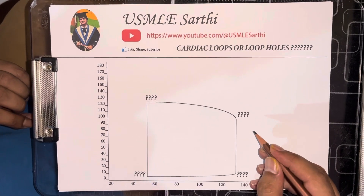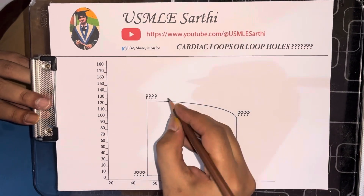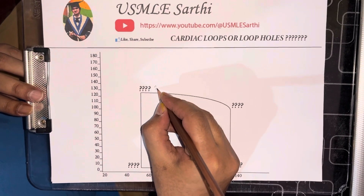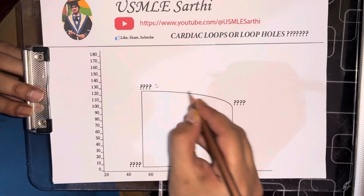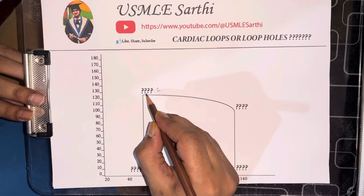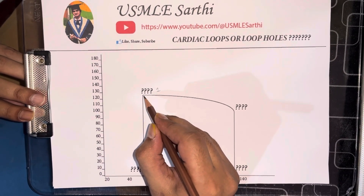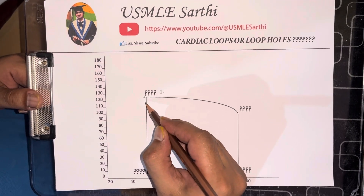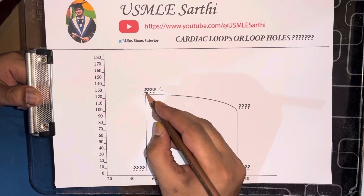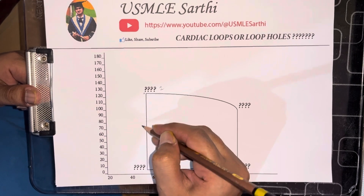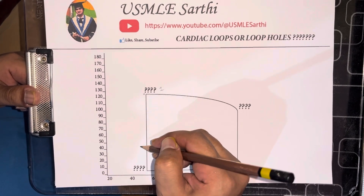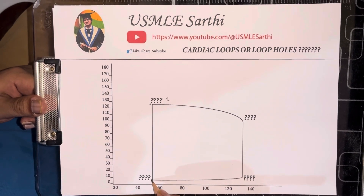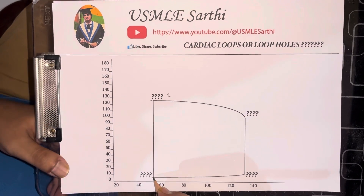We start from point one, which is the point where your aortic valve closes. From here, the ventricle will start to relax and this whole portion will be isovolumetric relaxation. At this point, the pressure will become near zero.